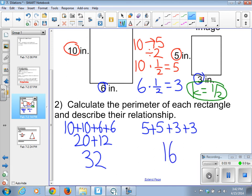If we notice, to get from 32 to 16, we multiplied by one half. So the perimeter, the scale factor of the perimeter from one to the other is the same as the side length scale factor.